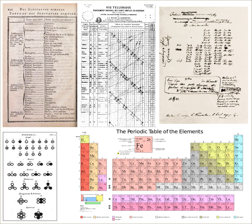Alexandre-Émile Béguyer de Chancourtois, a French geologist, was the first person to notice the periodicity of the elements — similar elements occurring at regular intervals when ordered by their atomic weights. In 1862 he devised an early form of periodic table, which he named the vis tellurique, or telluric helix, after the element tellurium, which fell near the center of his diagram. With the elements arranged in a spiral on a cylinder by order of increasing atomic weight, de Chancourtois saw that elements with similar properties lined up vertically.